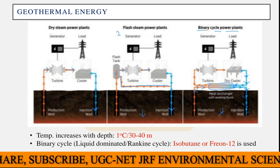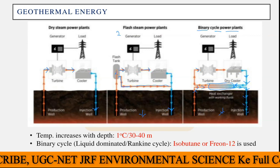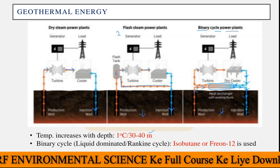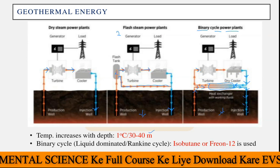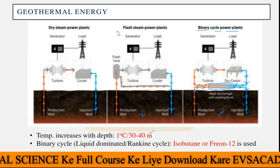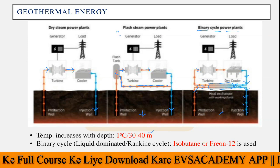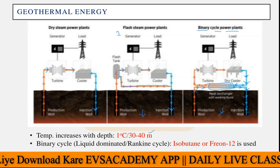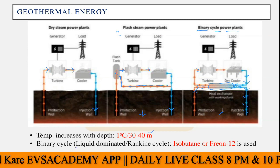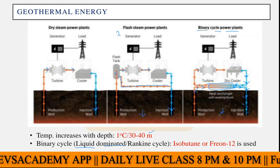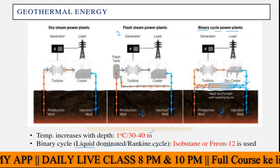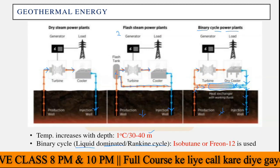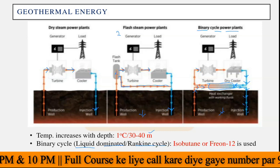The temperature increases with depth — that is 1 degree Celsius for every 30 to 40 meters, or approximately 25 to 30 degrees Celsius per kilometer. In the binary cycle, the liquid-dominated or Rankine cycle is another name for the binary cycle. These are types of the closed cycle of geothermal energy production.